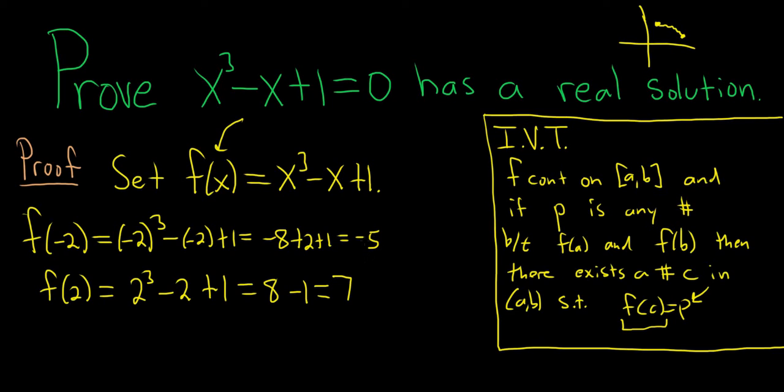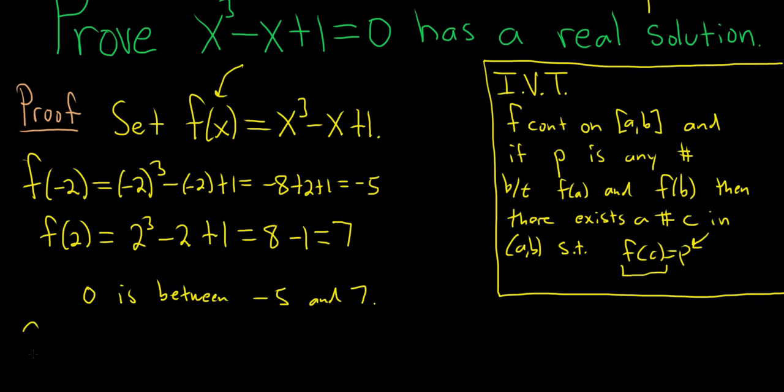So notice that 0 is between negative 5 and 7. Since f is continuous, and it's continuous everywhere, it's a polynomial, let's satisfy the Intermediate Value Theorem. So a and b here will be these values. This will be your a, and this will be your b.